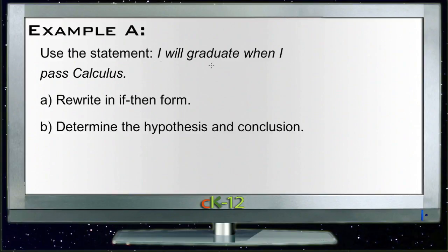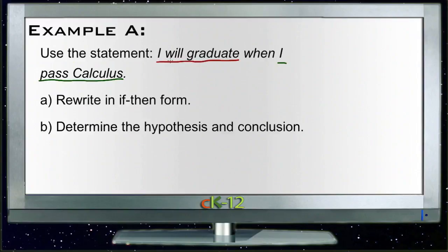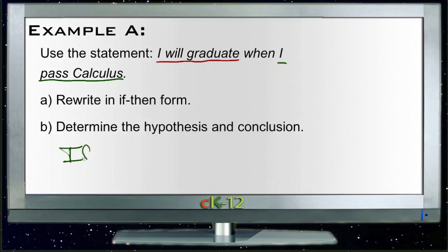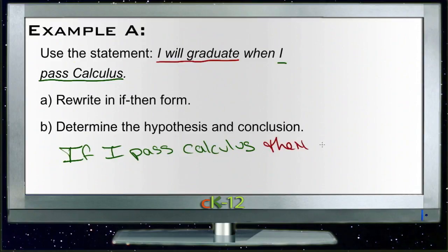One part of the statement is 'I will graduate' and the other part is 'when I pass calculus.' The two things that are going to happen are that he's going to pass calculus and that he'll graduate. Based on the way it's written originally, the graduation is planned to happen after the calculus. To write this in if-then format, we need to put the hypothesis first and then the conclusion afterward — exactly backwards of how it's currently written. So we write: if I pass calculus, then I will graduate.